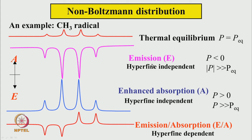A third possibility is what was shown for the acetone/isopropanol system — some lines are emissive and other lines are absorptive. It could be emissive on the low-field region and absorptive on the high-field region (hyperfine-dependent), or the reverse: low-field absorptive and high-field emissive. These are the various possibilities one can generally expect.